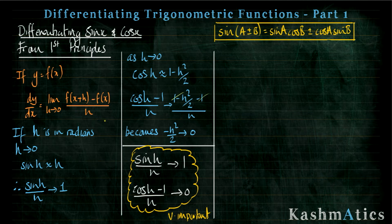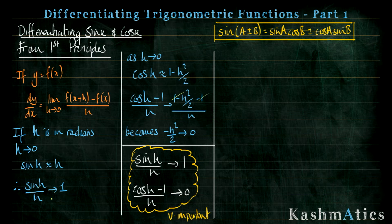Now what might be new to you is what I've got here in blue. If there's an angle in radians — I've just called it h here — if h is in radians, then as h approaches zero, so as it gets smaller and smaller, then sine h will be approximately h. So when it's very close to zero, sine h will be approximately h, which means sine h over h is going to approach one, because sine h will approach h, so h over h will approach one.